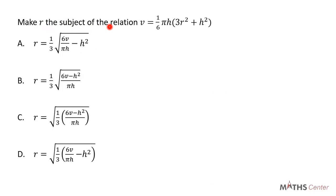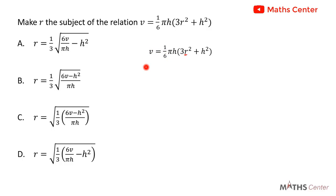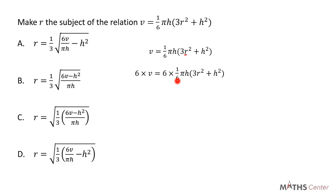Make R the subject of the relation V = (1/6)πH(3R² + H²). This is a multiple choice question; we will solve and then pick the correct option. We begin by multiplying both sides by 6 to cancel out the fraction. The left-hand side becomes 6V, and the right-hand side becomes πH(3R² + H²).